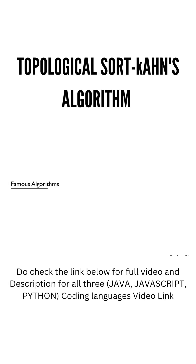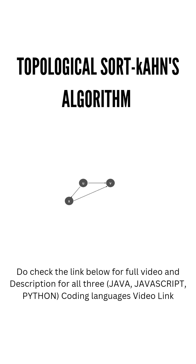In this video, we are going to discuss topological sort using Kahn's algorithm. So what is topological sort? Topological sort, or topological ordering of a directed graph, is a linear ordering of its vertices such that for every directed edge uv, the vertex u comes before vertex v in the linear ordering of that graph.